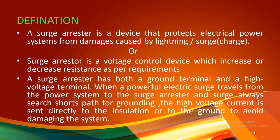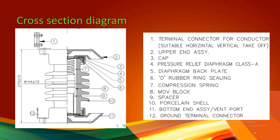So it is a protection device and a voltage control device which increases or decreases resistance as per requirement. Here we have a general cross-section of the surge arrester. It has a terminal connector where the conductor is connected. The mounting can be horizontal or vertical, according to custom demand. Second is the upper end assembly and cap.